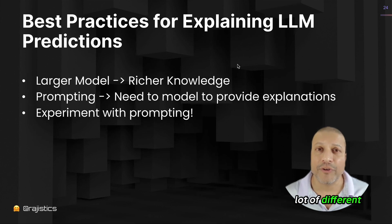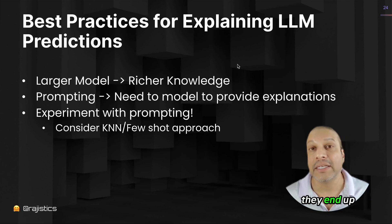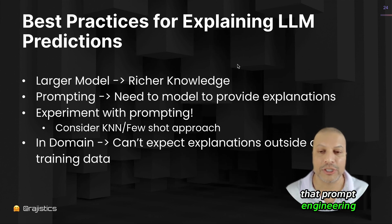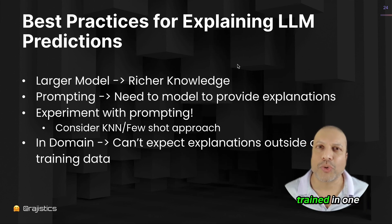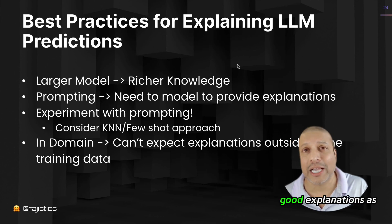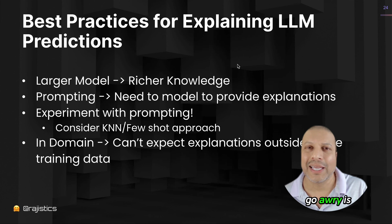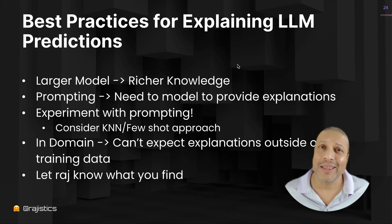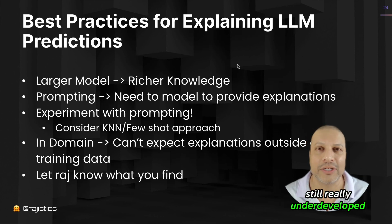I've seen methods like adding nearest neighbors and few-shot approaches that end up with much better results — the same goes for explanations, so think about spending time on prompt engineering. And set reasonable expectations: if your model is trained in one domain, don't expect good explanations when asking questions outside that domain. That's often where I've seen explanations go awry — when you're asking the model a little too much. Finally, let me know what you find. This is an interesting and fascinating area, still really underdeveloped at this point.